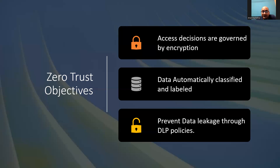Data is now automatically classified and labeled. In the old ways, manual classification was inconsistent, so to avoid issues with data not being labeled properly or labels being applied inaccurately, we automate data classification. We can use the AIP scanner — Azure Information Protection — to automatically classify and protect files. The Azure Information Protection unified labeling scanner is being renamed to Microsoft Purview Information Protection Scanner. Configuration can be done through both the Azure portal and the Compliance portal, and this configuration feature is currently in preview.